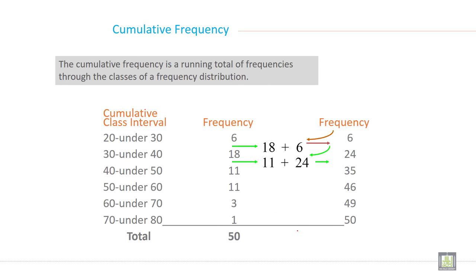How to calculate cumulative frequency? And what is this? Cumulative frequency is a running total of frequency through the classes of a frequency distribution. For example how to calculate this? First frequency is the same as cumulative frequency.